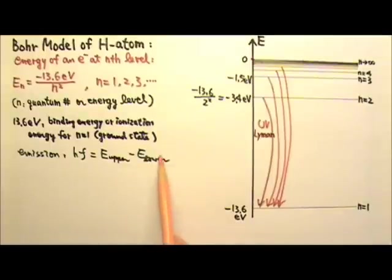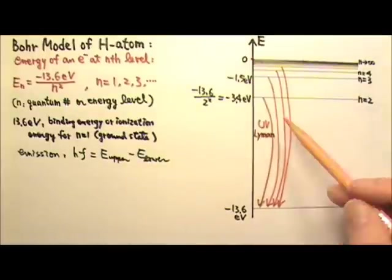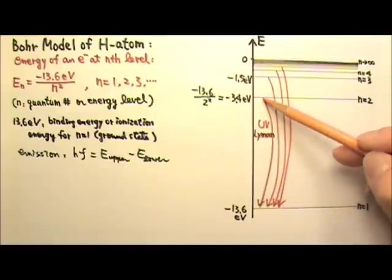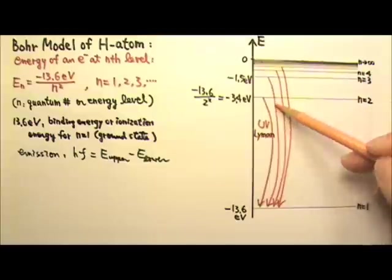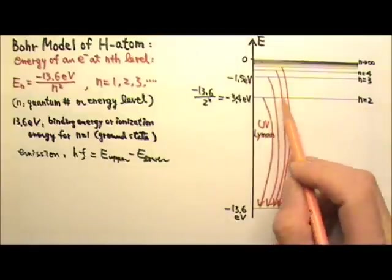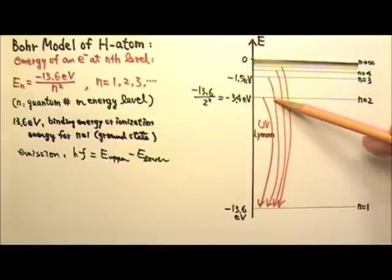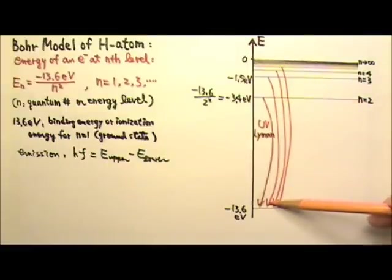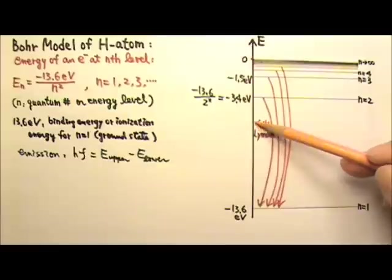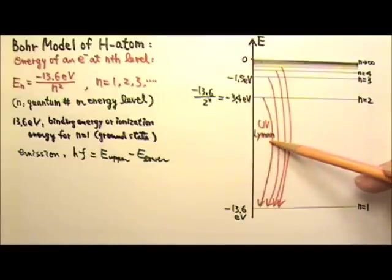If the lower energy state of this transition is N equals 1, which means the transition goes from 2 to 1, 3 to 1, 4 to 1, etc., then the transitions would involve the most amount of energy because this gap involves the most energy. Then those photons will be in the UV range and that's called the Lyman series.